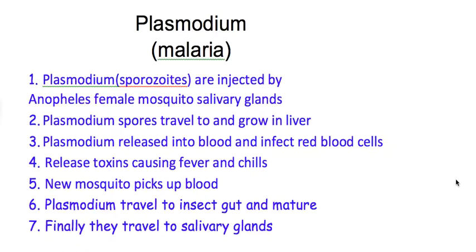Here is the life cycle of how it works. The plasmodium, or the spores of it, are carried in a female mosquito called Anopheles — you should know that. They're carried in the salivary glands, and when this mosquito bites you, it injects its saliva into you. With it come the spores, which travel and grow in our liver. Once they grow enough in the liver, the plasmodium are released into our blood and infect the red blood cells, growing there.